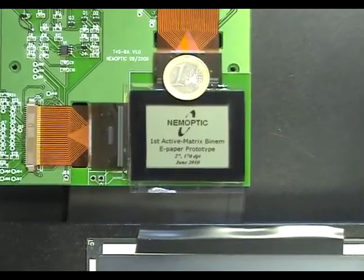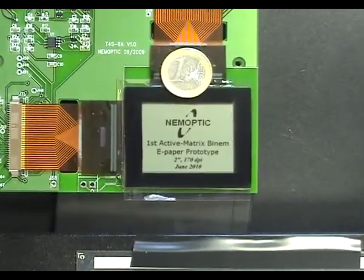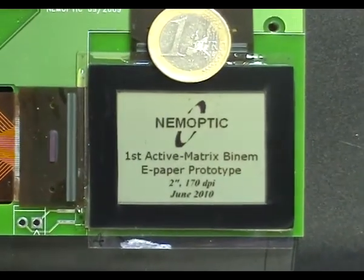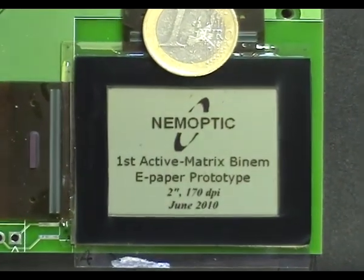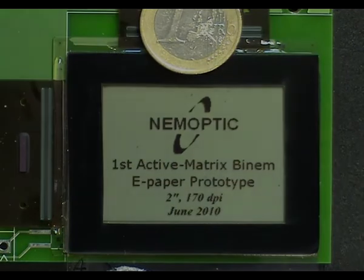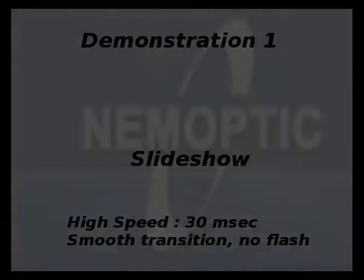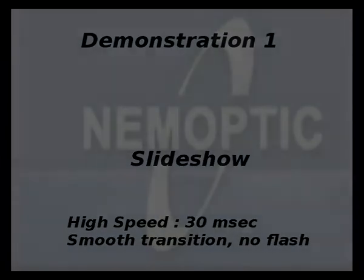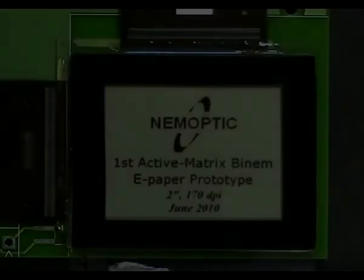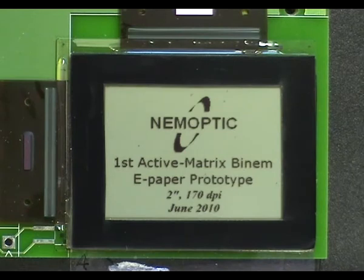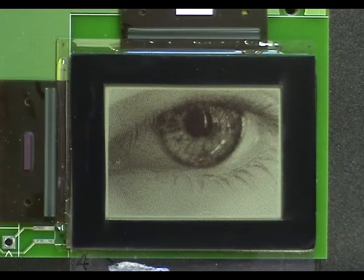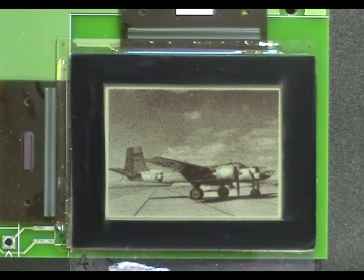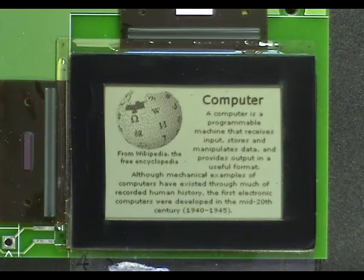This is the first prototype of an active matrix BINEM ePaper display. Active addressing enables fast image refreshing. In this prototype the complete frame is refreshed in 30ms only.